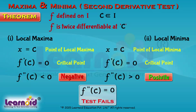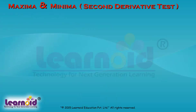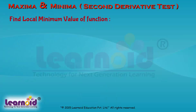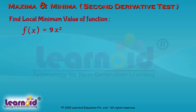Let us try to understand by an example. Find the local minima of the function f(x) = 9x² + 12x + 2. Let us first find the critical points to examine.